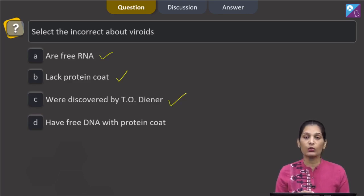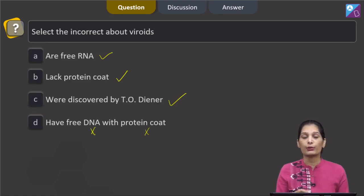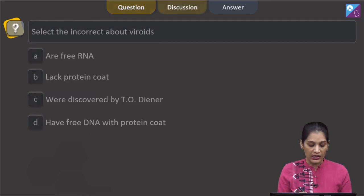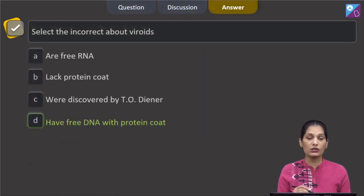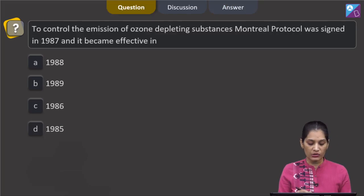D: Have free DNA with protein coat. No, they do not have DNA as well as protein coat. So the correct option for the given question is option D which says they have free DNA with protein coat, as this is not true for them. Let us move to the next question.